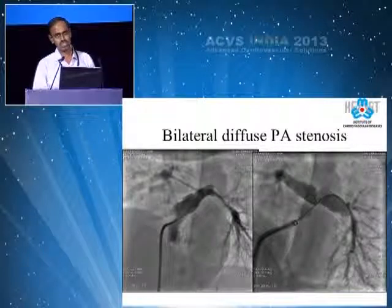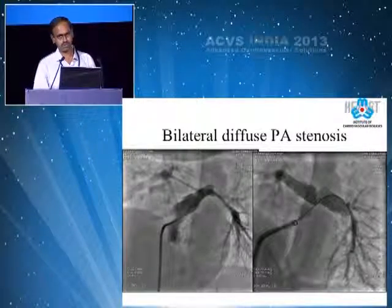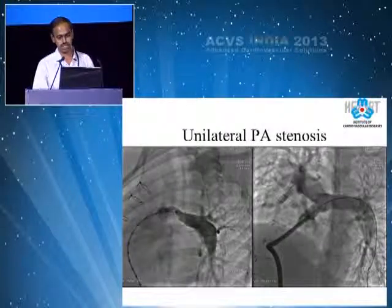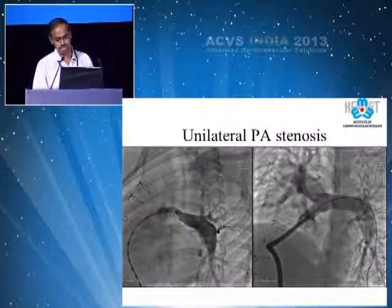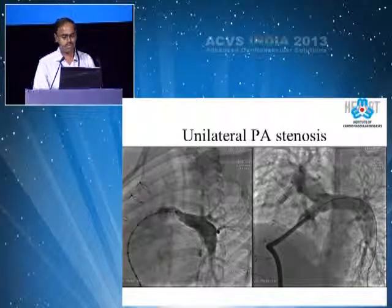Sometimes the distal end of MPA stenting may extend onto the proximal portion of the RPA and LPA, where you may have to do something like Y-stenting. This is a Y-stent that goes from the main pulmonary artery into both branch PAs.